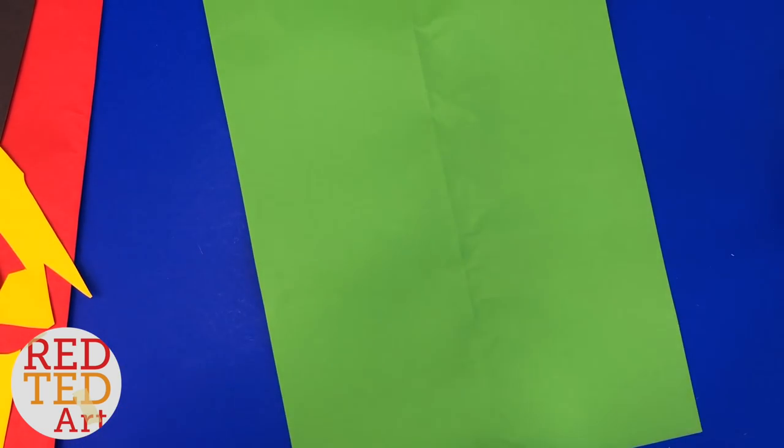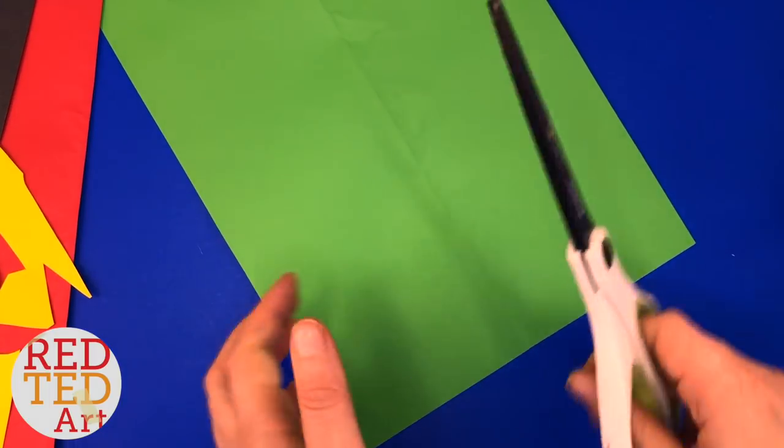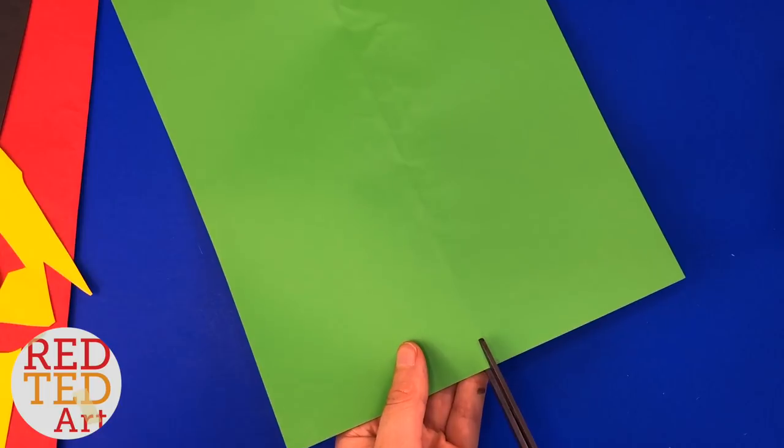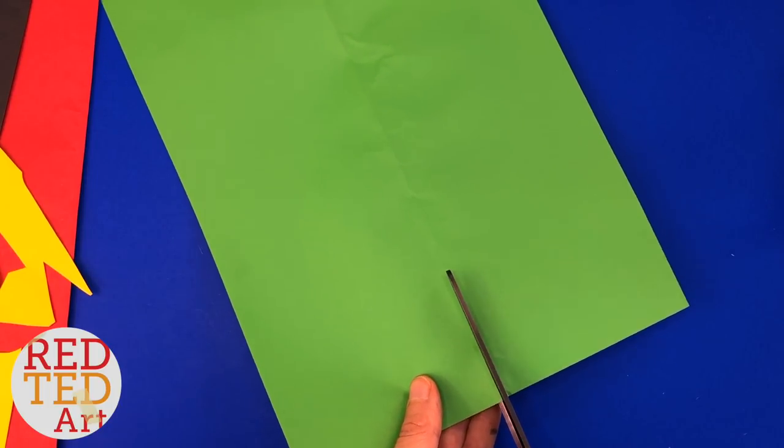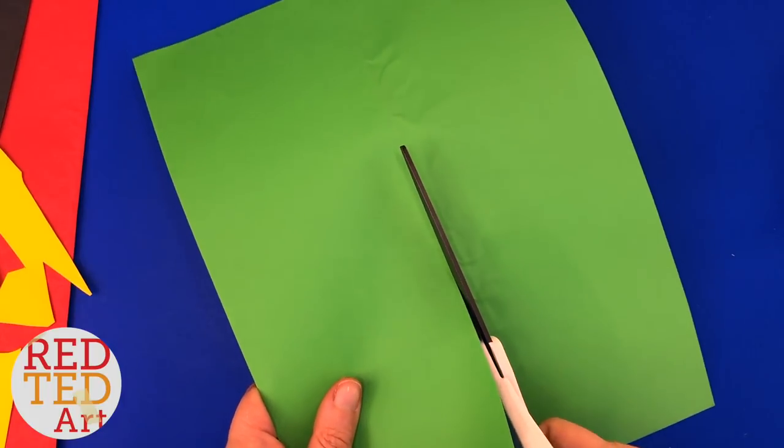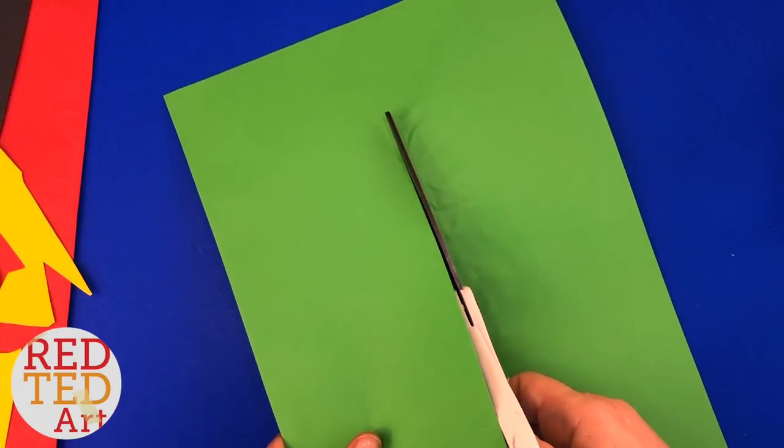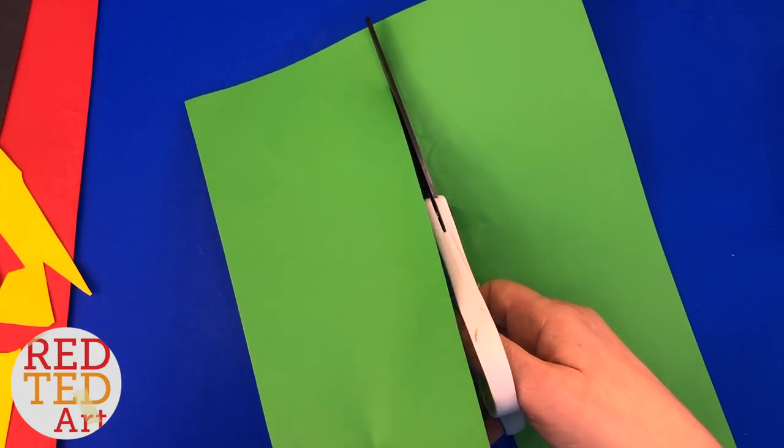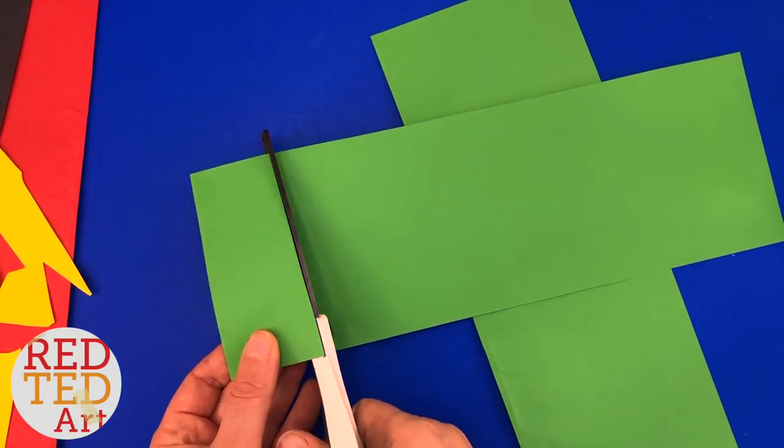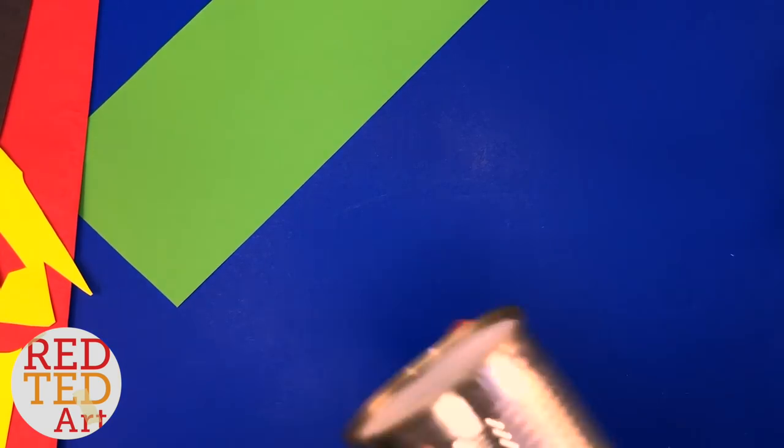You can of course use a ruler and measure it out properly, but I'm a little bit lazy as you know. Right, so I've got my line here, I'm going to come just about two millimeters in from the line. Then I'm going to take my straight line here and keep these for other crafts.